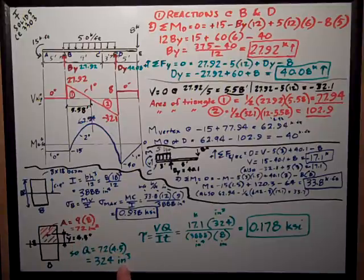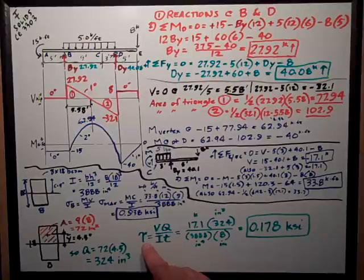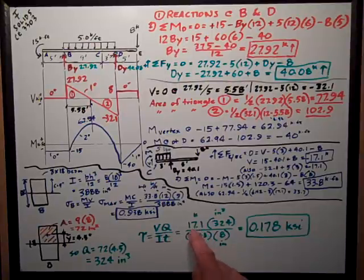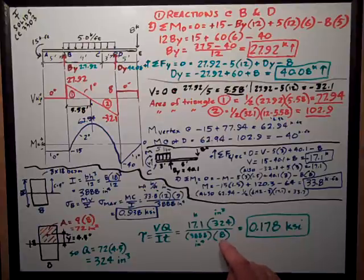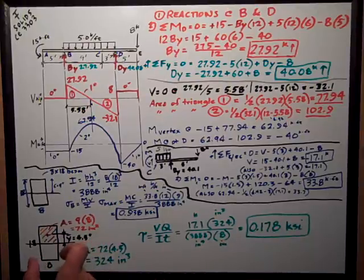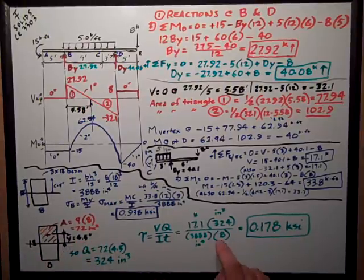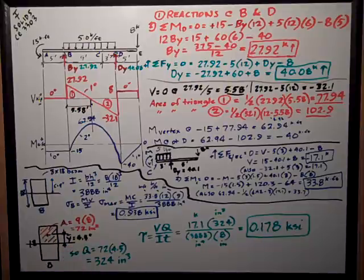Now I've got everything I need. My maximum shear, transverse shear stress is VQ over IT. V, the shear is 17.1 kips. Q is 324 inches cubed. I is 38.88 inches fourth. And the thickness over which the shear is applied is 8 inches, the width of the beam. That comes out to be 0.178 KSI.